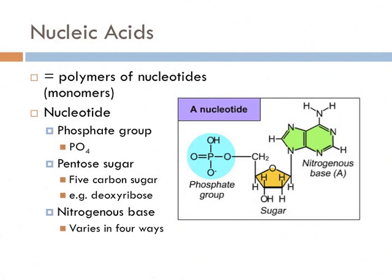A nucleotide always has three components. One, it always has a phosphate group — a phosphorus atom attached to four oxygen atoms. Two, it has a pentose sugar group, defined as a circular, five-sided sugar, which you can see in yellow here. This sugar specifically is called deoxyribose, hence deoxyribonucleic acid.